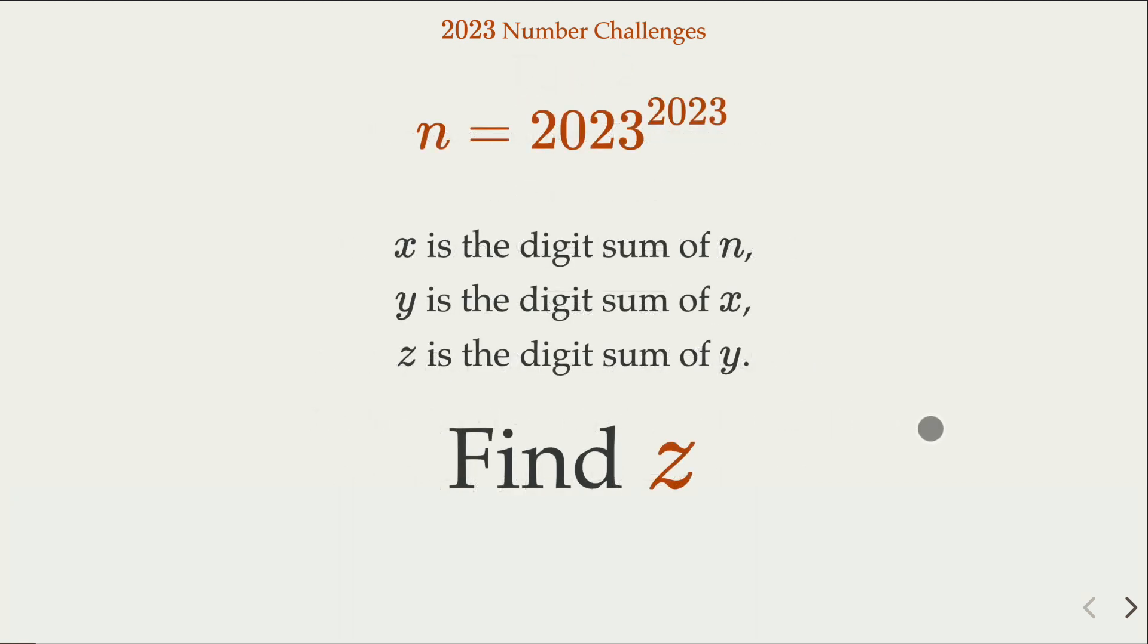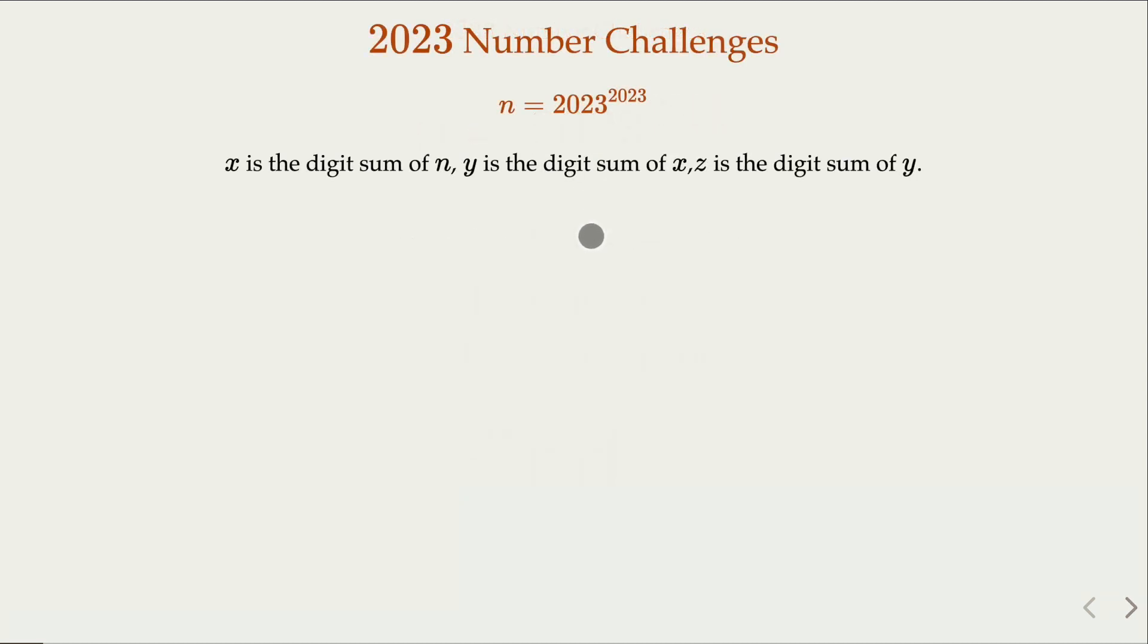Now let's go back to the original question. We're trying to find z. We're going to figure out what this is congruent to mod 9. 2023 itself is actually, from earlier we know that all the digits are congruent to 7 mod 9. So n, x, y, z, four different numbers, are all congruent. 2023 itself is actually congruent to 7 mod 9.